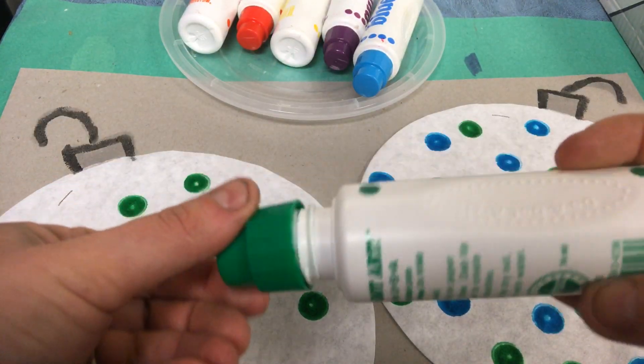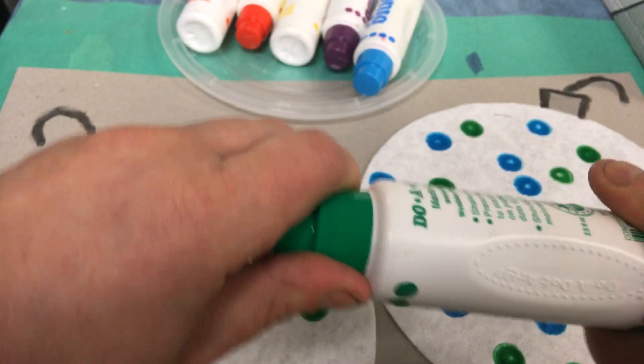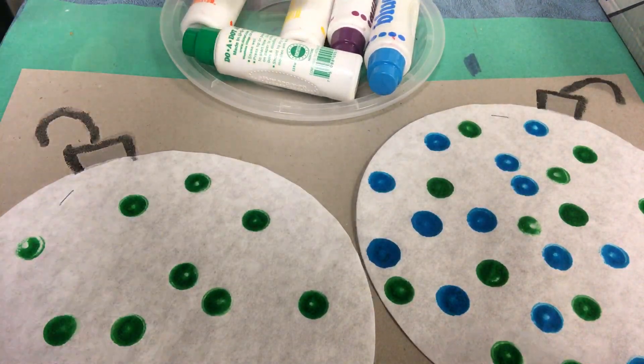Want to get a different color? Put the cap on. Twist, twist, twist, until it's tight. Make it a different one.